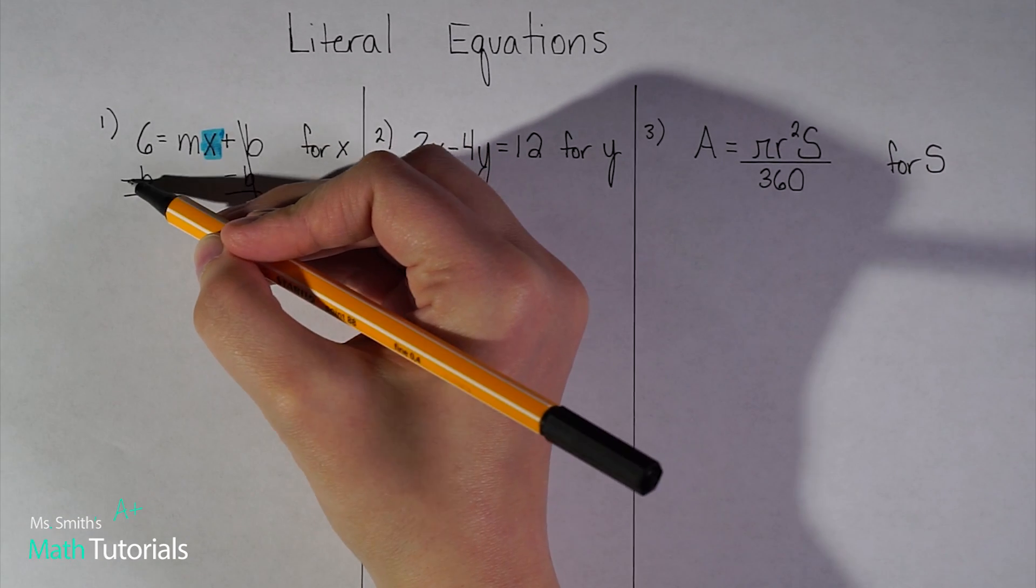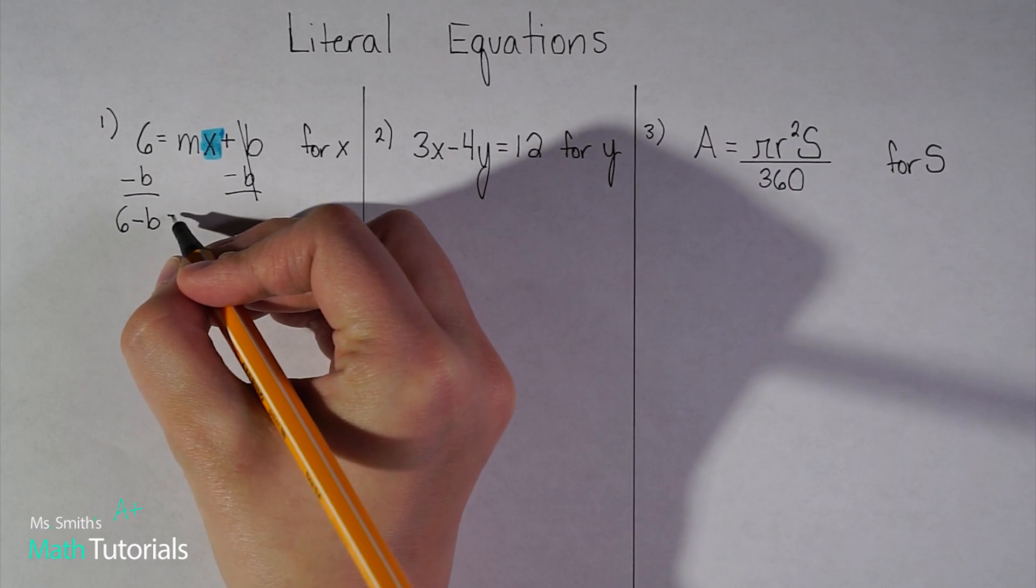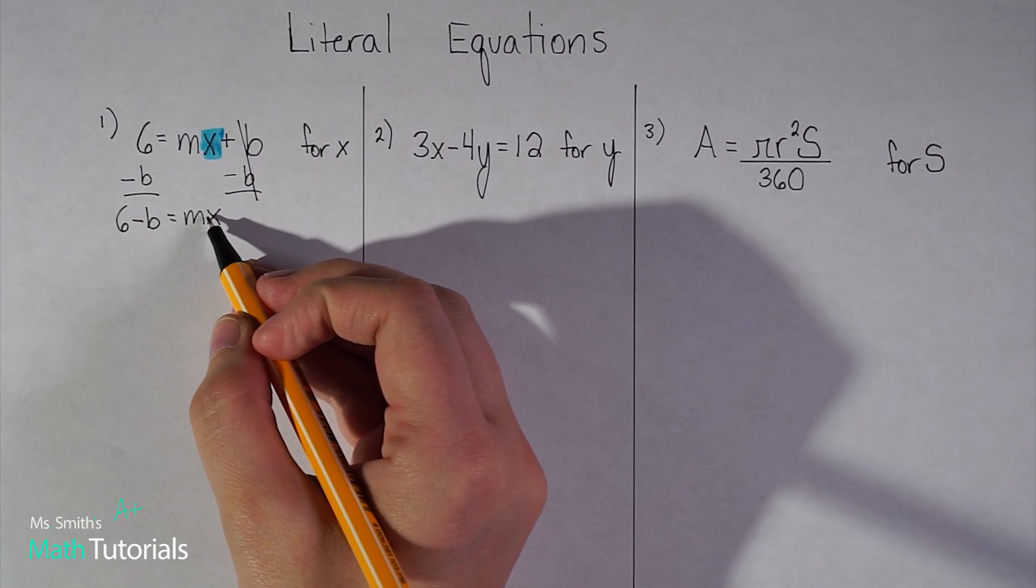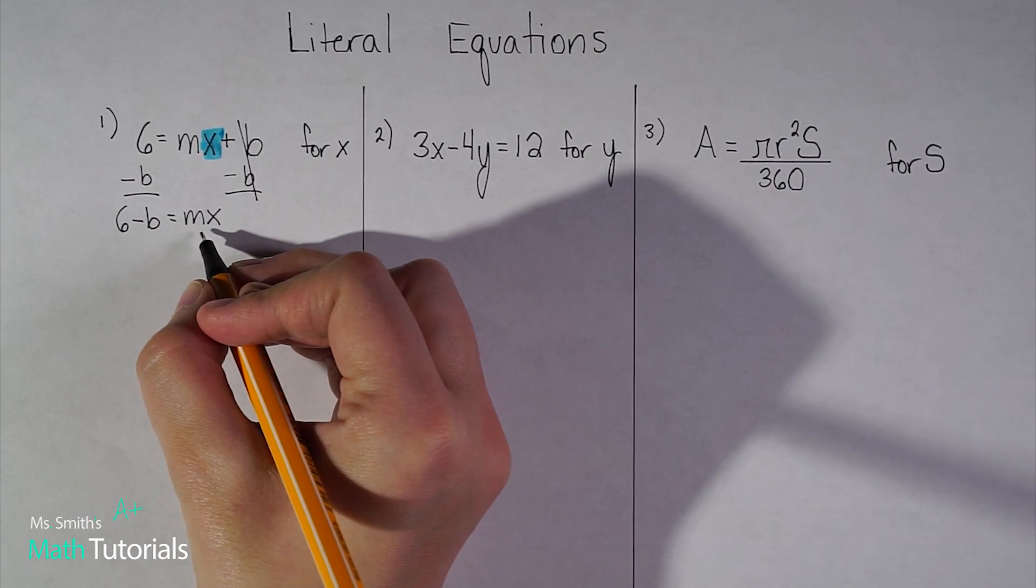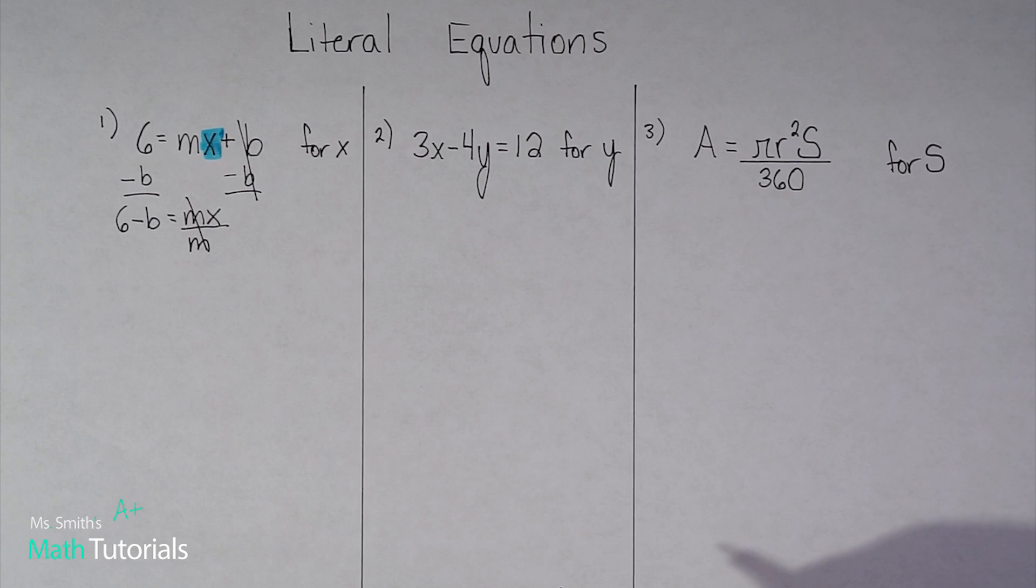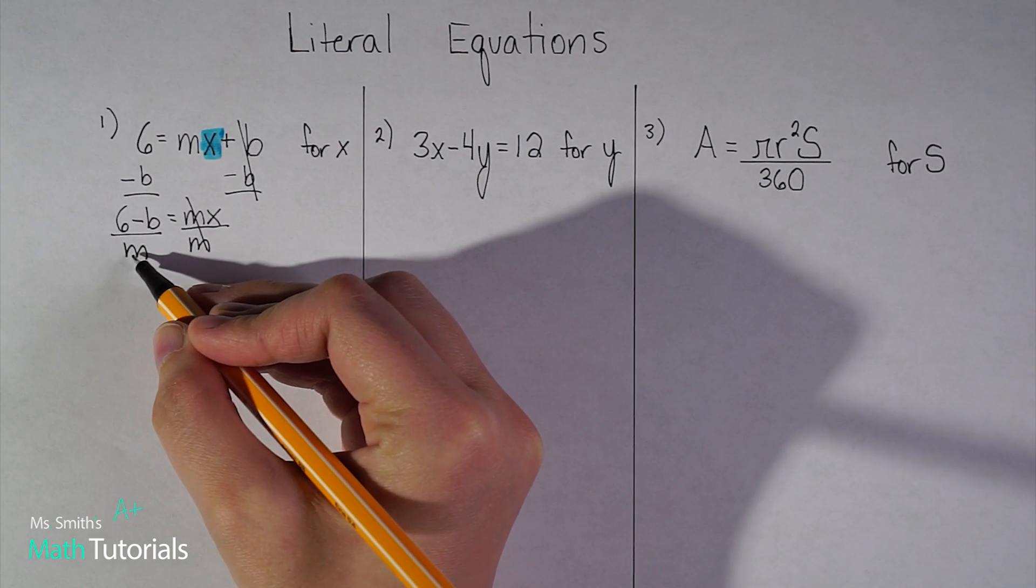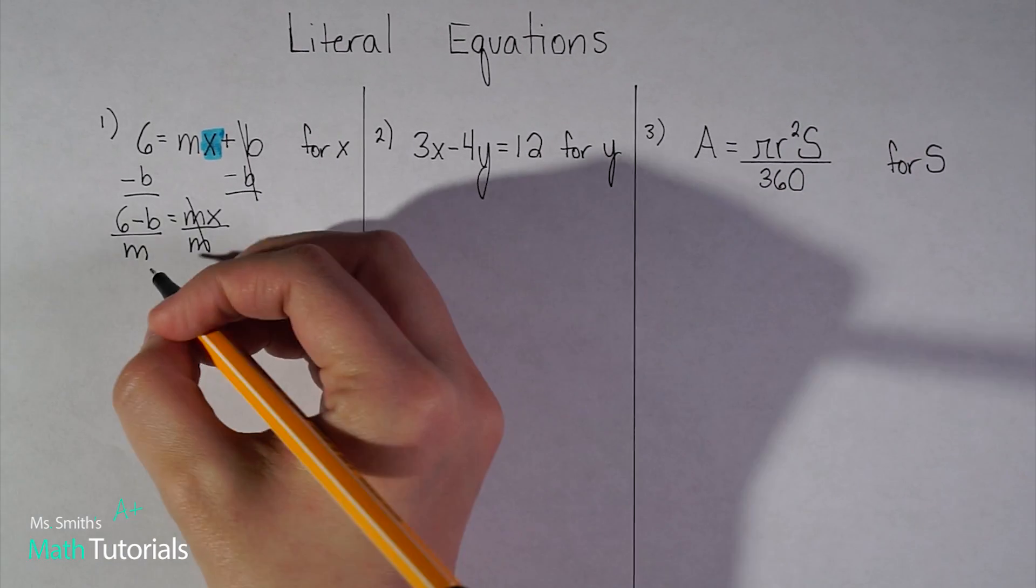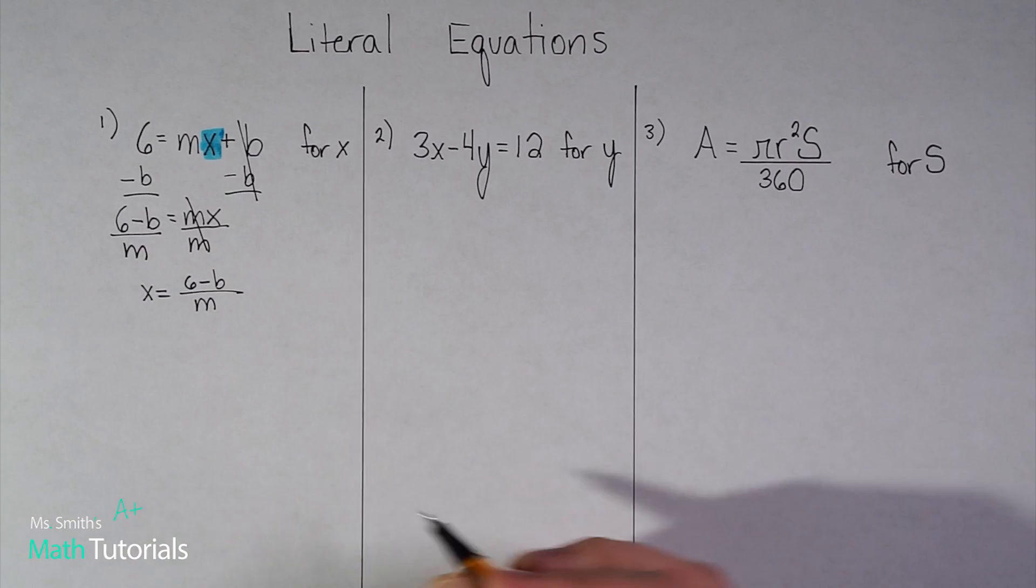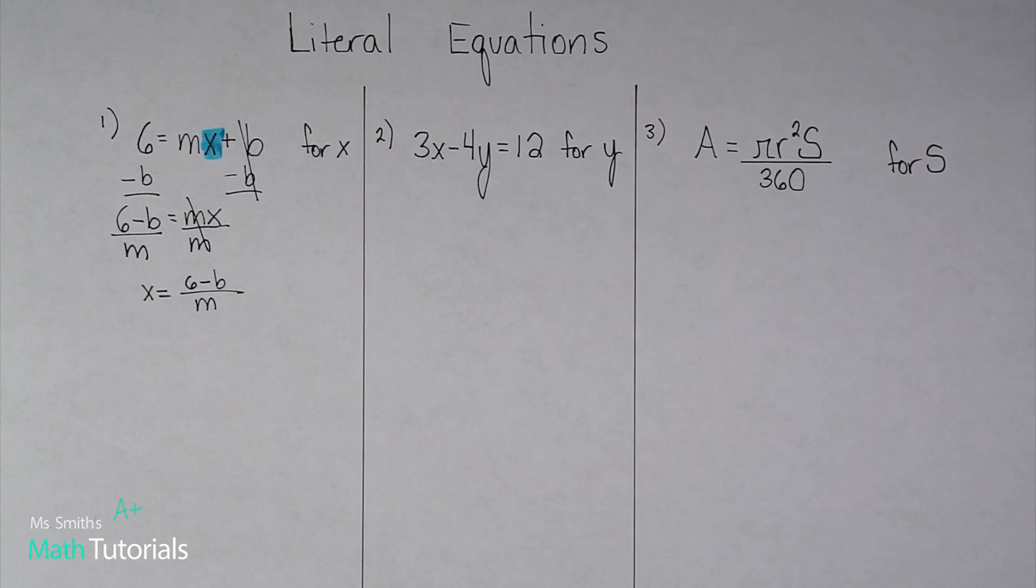Now, you might say, oh, I can't combine that six minus b. Those aren't like terms, and you're right. We can't. So that's okay. We just rewrite them. I just write six minus b equals, and I still have my mx. And remember, x is what I'm trying to solve for. So this is really m times x. I know that because they're hugging each other up close. So I need to divide to split them up, and I want the m to be the one that goes away. I want that to reduce to one. But what I do to this side, I have to do to this side.